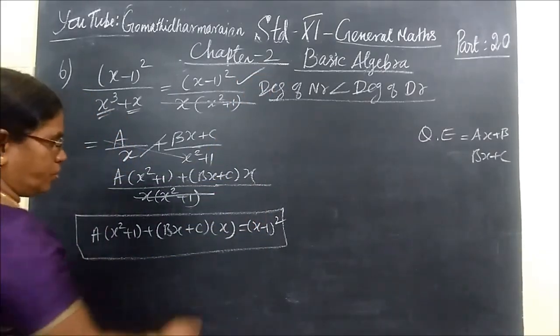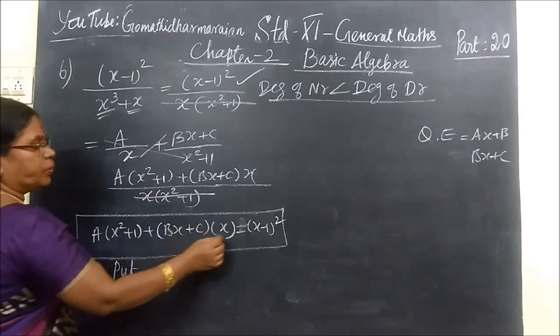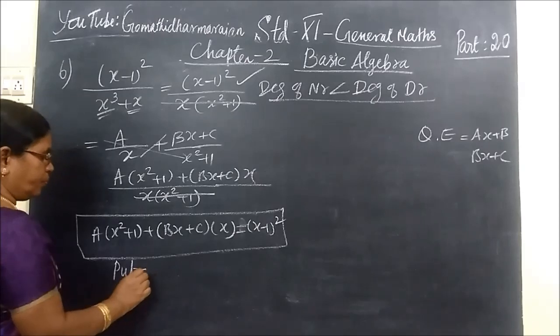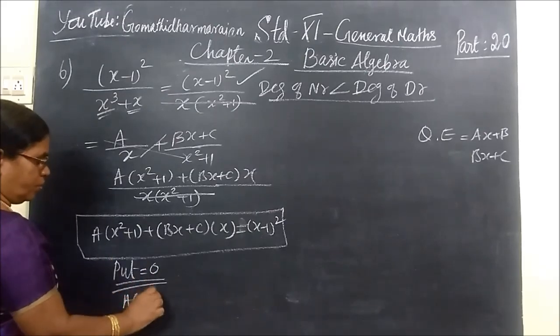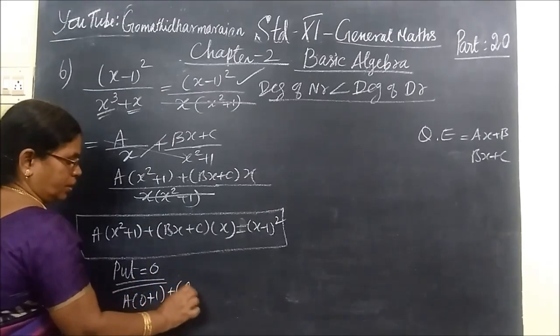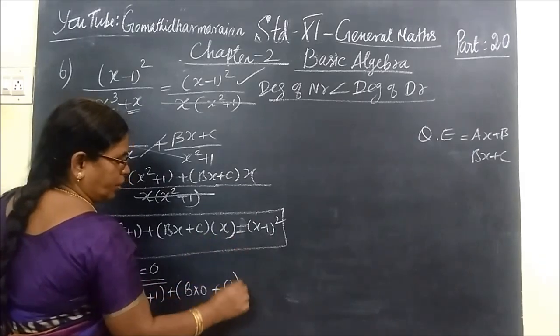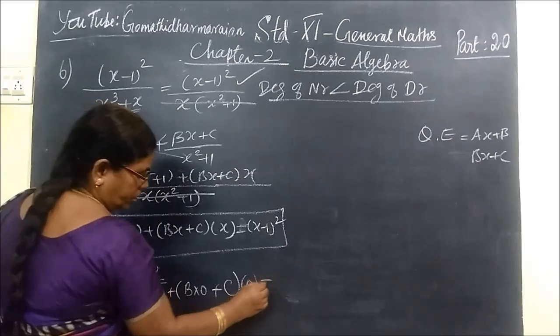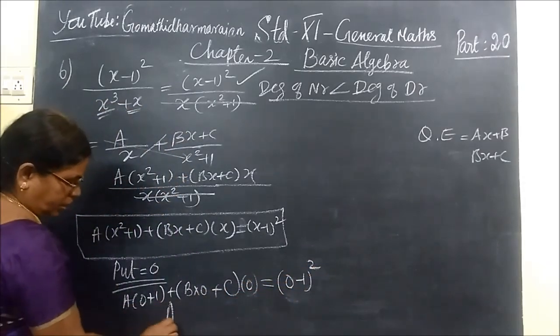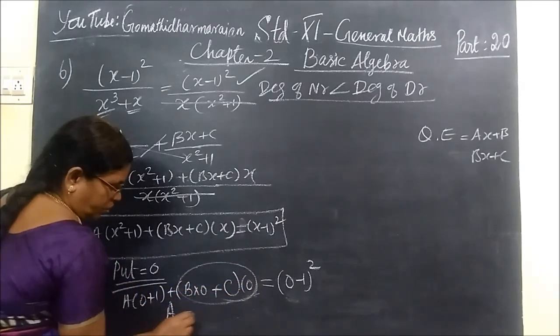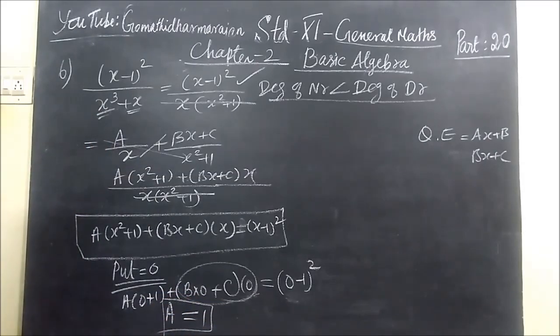So now put x equal to, in this case, 0 is in the denominator. You put x equal to 0. You see, put x equal to 0: A(0+1) then B(0)+C. However, if you put x equal to 0, this is equal to (0-1)² = 1. So here A, this is totally 0, equal to (-1)² means 1. So we have found the value of A. A=1.